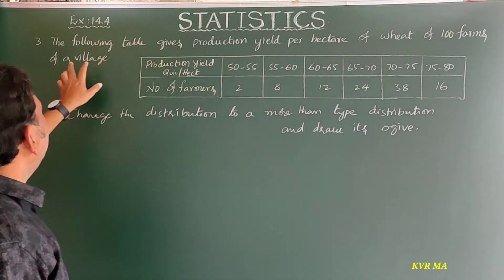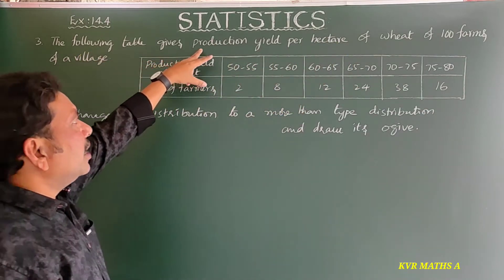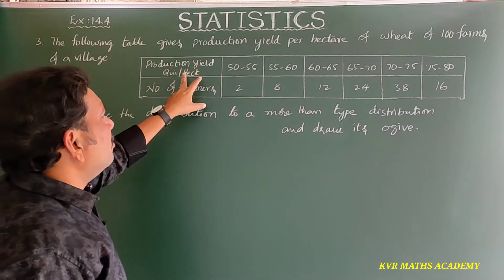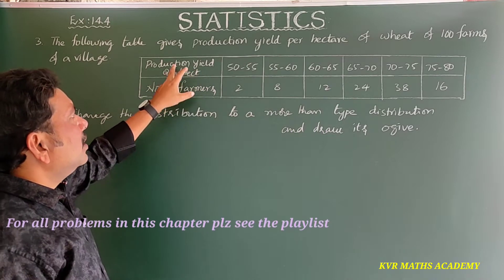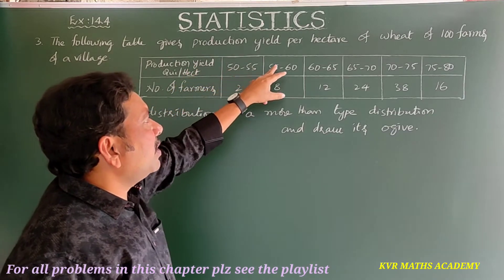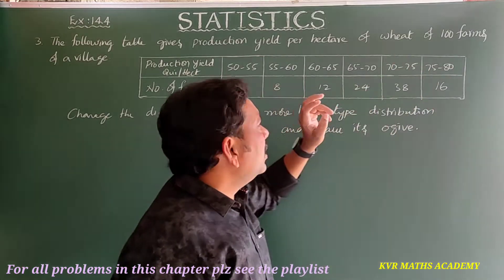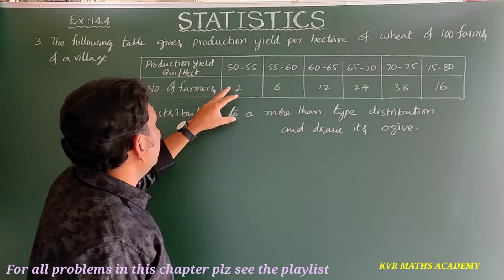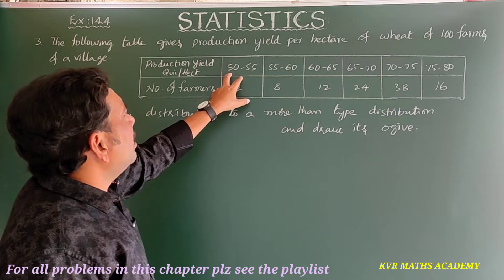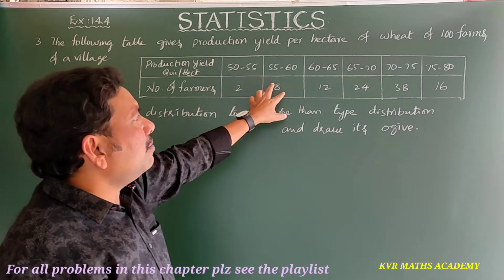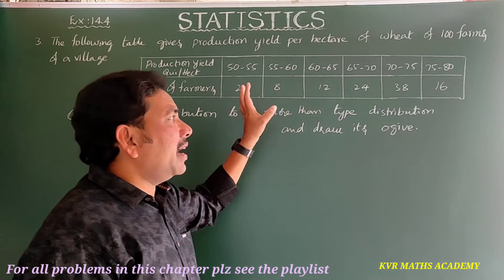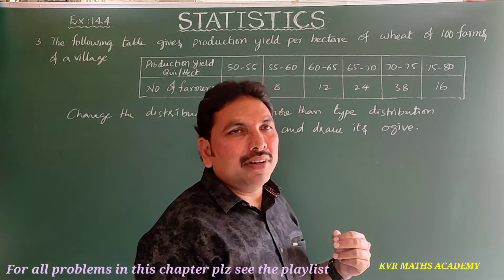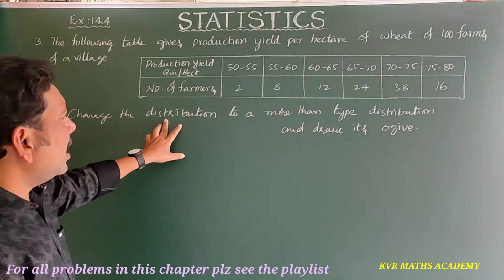The following table gives the production yield per hectare of wheat of 100 farms of a village. Production yield in quintals per hectare and number of farmers are given: 50–55, 55–60, and so on up to 75–80. The number of farmers is 2, 8, 12, 24, 38, and 16. So two farmers get 50–55 quintals per hectare, eight farmers get 55–60 quintals per hectare, and 16 farmers get 75–80 quintals per hectare.